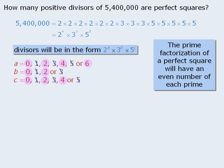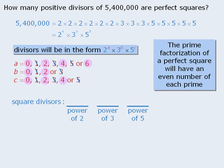Now let's use this information to find the total number of square divisors of 5.4 million. To do this, we'll use some counting techniques. We're going to build square divisors in stages. Since all of our square divisors must be in the form 2 to the power of a times 3 to the power of b times 5 to the power of c, our first stage will be to select a power of 2, our next stage will be to select a power of 3, and our last stage will be to select a power of 5. Beginning with the first stage, the power of 2 can be 0, 2, 4, or 6, so there are 4 ways to accomplish this stage.